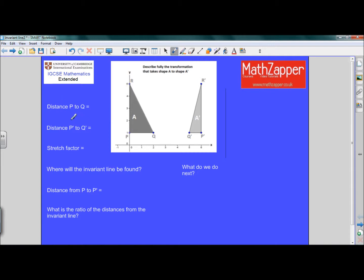First of all, let's look at the distance from P to Q. It's a distance of two units. And also the distance P dash to Q dash, so P dash to Q dash is minus one unit.